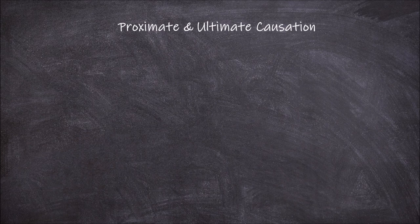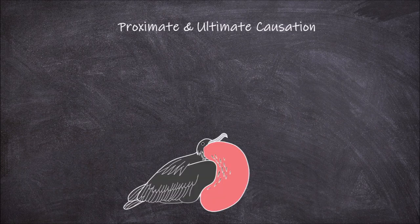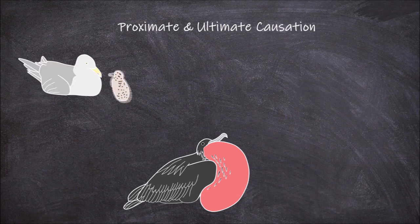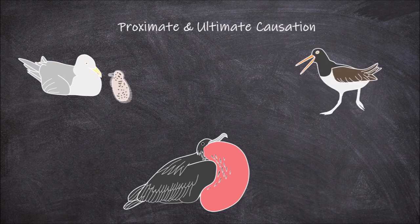All animals exhibit a range of behaviors. For example, when a male great frigate bird inflates their red pouch and vibrates their wings to attract a female, or a young seagull chirps for food from their mother, or when an adult oystercatcher chirps aggressively and chases another bird coming within its territory. These are all examples of behaviors displayed by an animal.